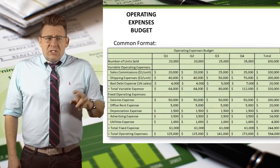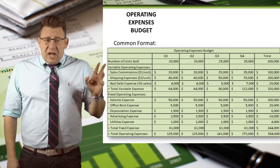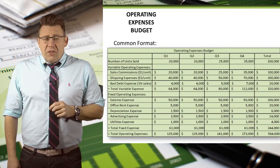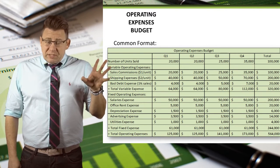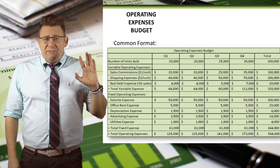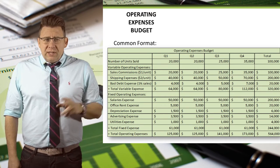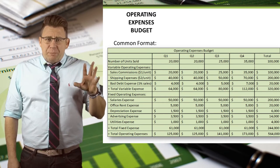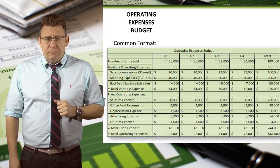Here we have an example of an operating budget. Although it looks like a lot of items, most businesses will actually have many more items. Let's look at the variable and fixed separately so you can see the details a little better.